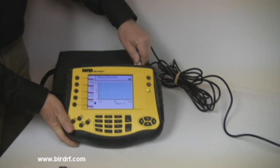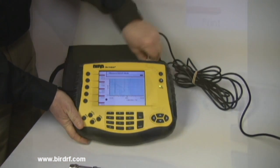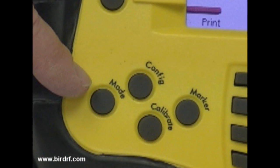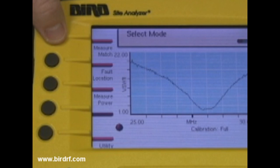Step one of the measurement procedure is to take the antenna connection cable and attach it to the test port. Next you will need to press the mode button located in the bottom left hand corner of the sight analyzer. This brings up a select a mode option on the screen.